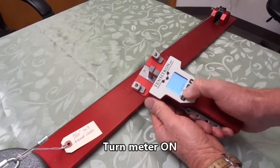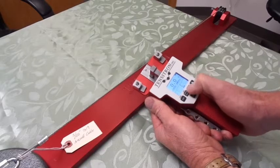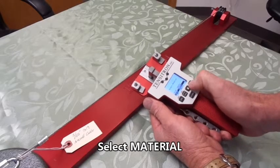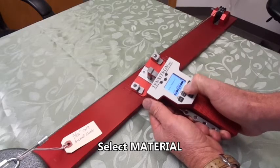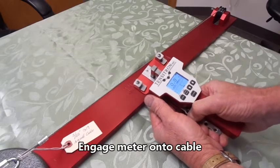First step is to turn the meter on, then press the up arrow. To select material press enter, then scroll through the different materials until you find the one you need. Select it by pressing enter, you are ready to take measurements.